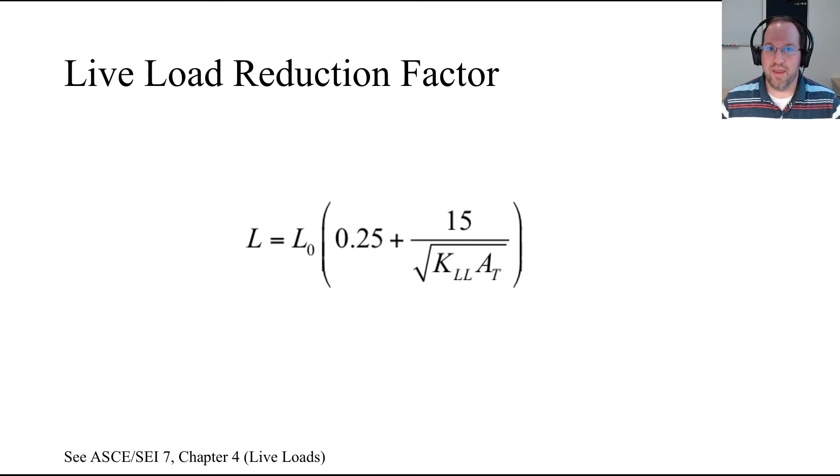One place where this comes into play is in our live load reduction factor suggested in ASCE 7. This factor allows you to reduce your live load if you have a very large tributary area or influence area. This equation uses our unadjusted live load and also the influence area given in square feet. Note that this equation is unique to square feet; there is a meter squared version also in ASCE 7 with different coefficients.